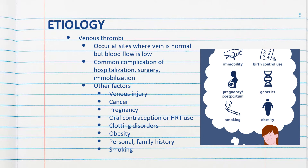Let's talk about the etiology of DVTs — what can cause them. Thrombi can be either venous or arterial. Venous thrombi tend to occur at sites where the vein is normal but blood flow is low. Arterial thrombi tend to occur at sites of arterial plaque rupture. DVT is a common complication of hospitalized patients and patients who have had surgery or are immobilized.